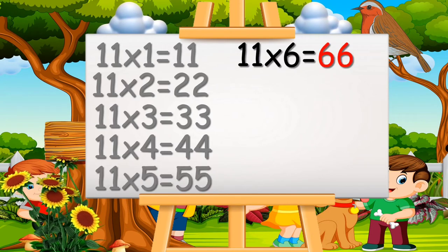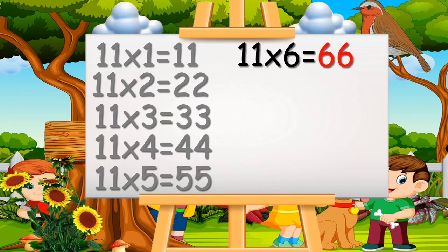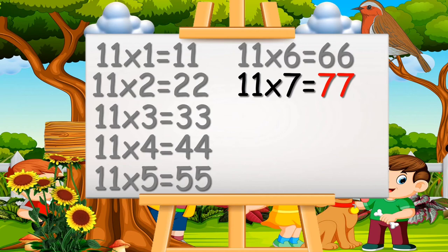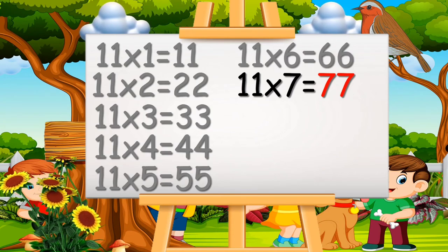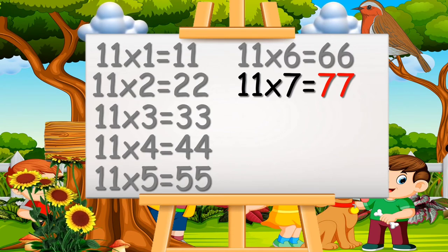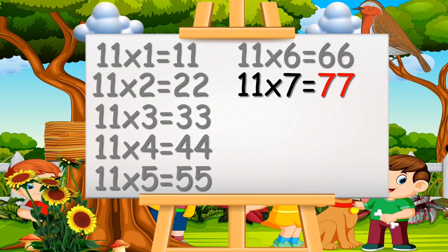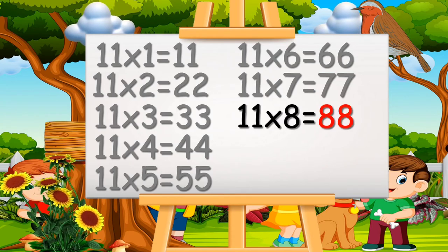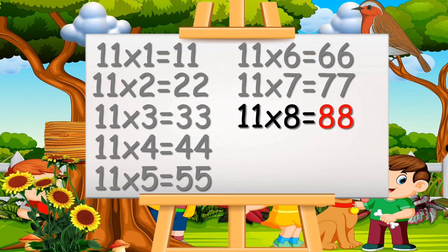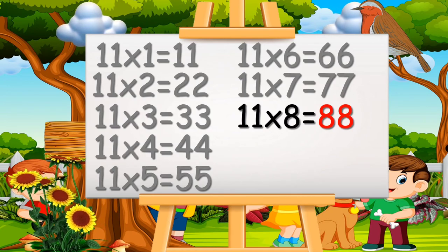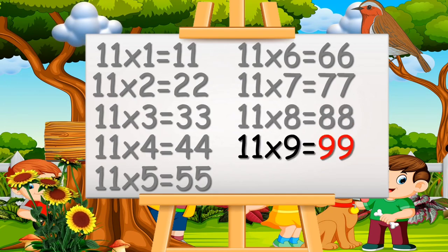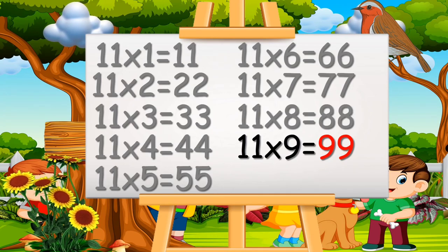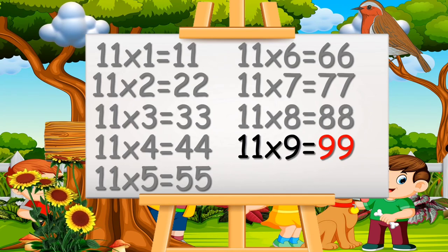Eleven sixes are sixty-six. Eleven sevens are seventy-seven. Eleven eights are eighty-eight. Eleven nines are ninety-nine.